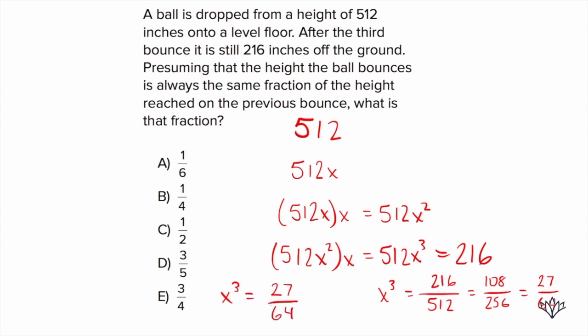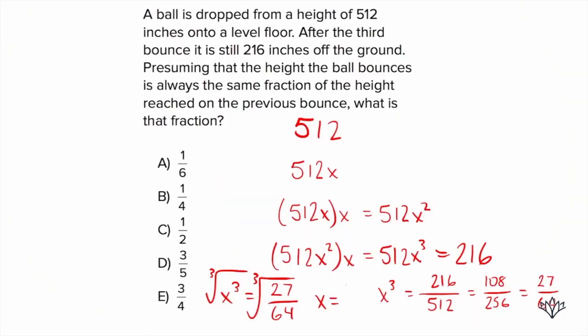Now we need to take the cube root of both sides. On the left, the cube root of x cubed just leaves us with x. On the right, the cube root of 27 over 64 breaks down into the cube root of 27 over the cube root of 64. The cube root means the number times itself times itself that gives you what's inside. 3 times 3 times 3 is 27, and 4 times 4 times 4 is 64. So we get 3 on the top and 4 on the bottom.